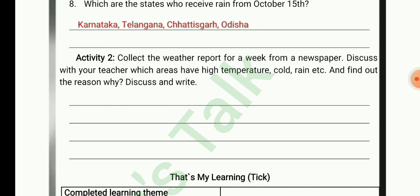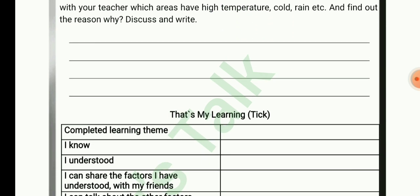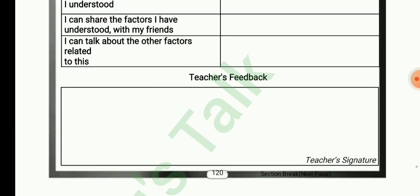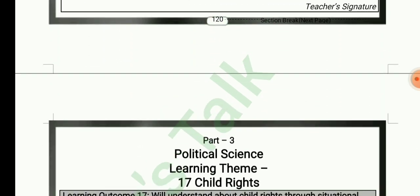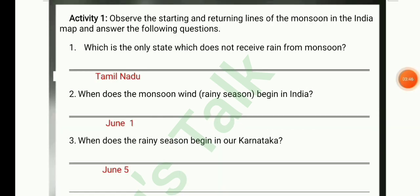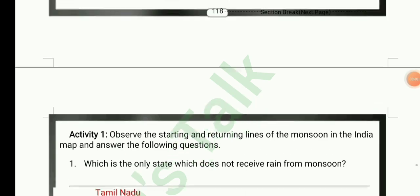Activity 2: collect the weather report for a week from a newspaper. Discuss with your teacher which areas have high temperature, cold, rain, etc., and find out the reason why, then discuss and write. This is a classroom activity and that is the learning tip with teacher's feedback. We have completed the geography part. If you think this video can help a student, kindly share.